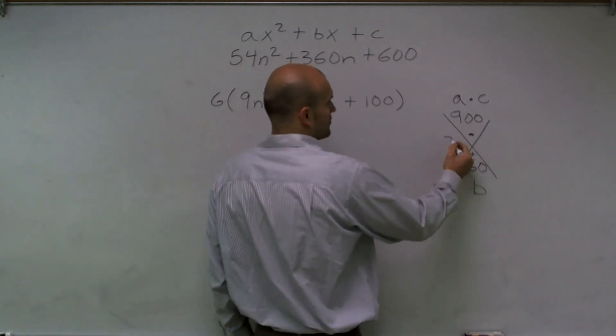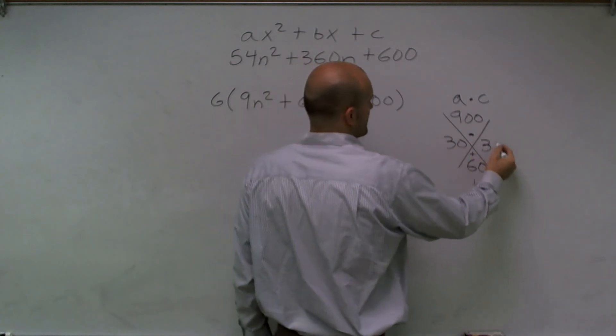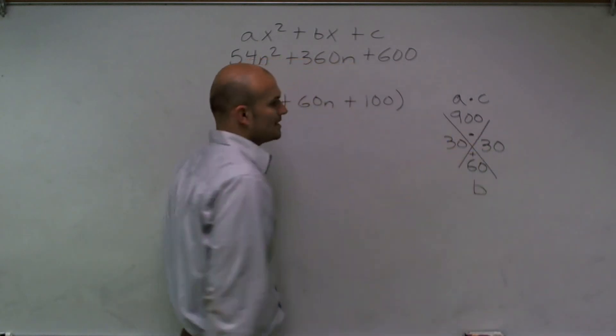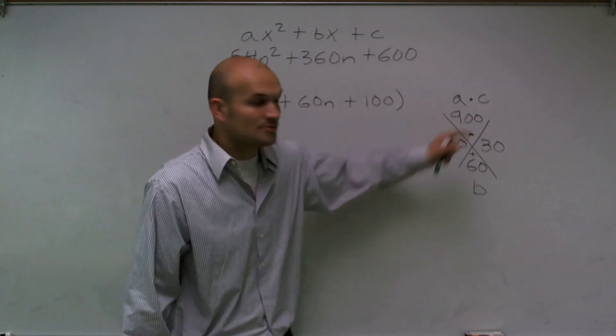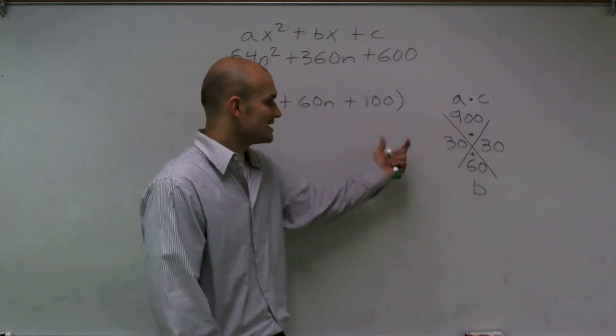Those two numbers add up to give me 60 and they multiply to give me 900. So that's going to be my two terms.